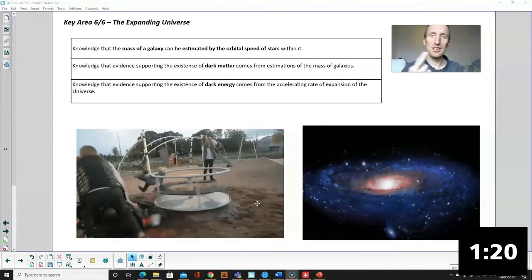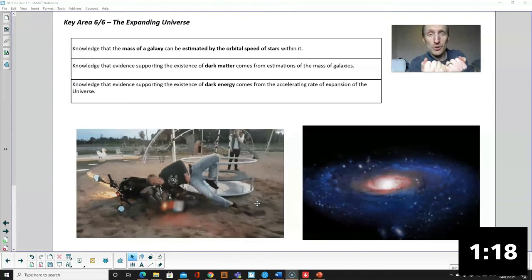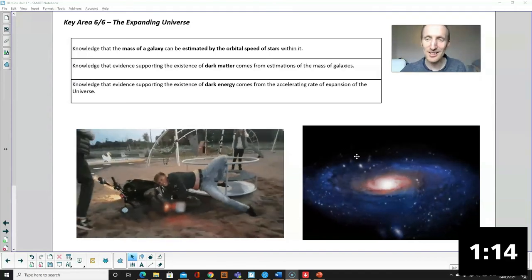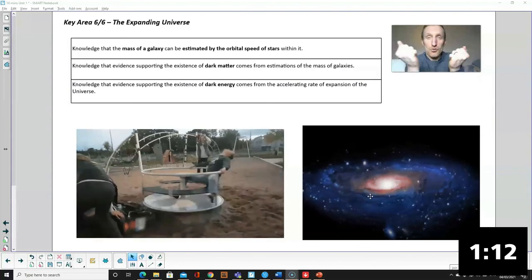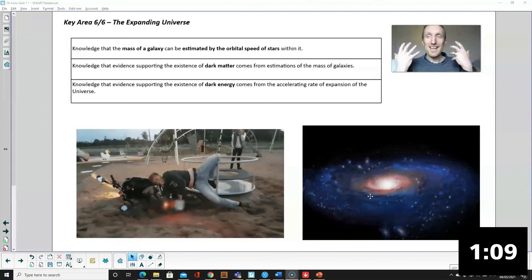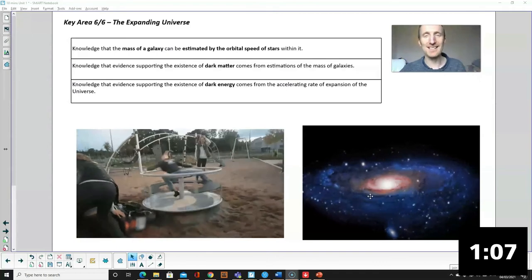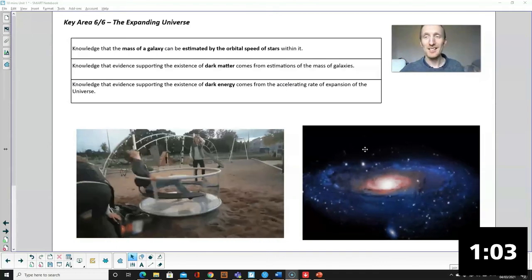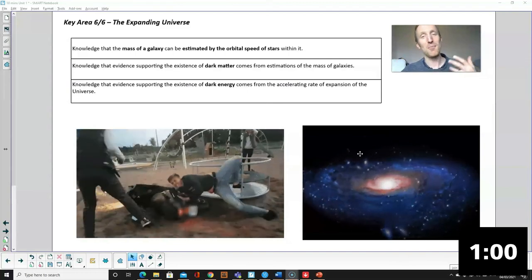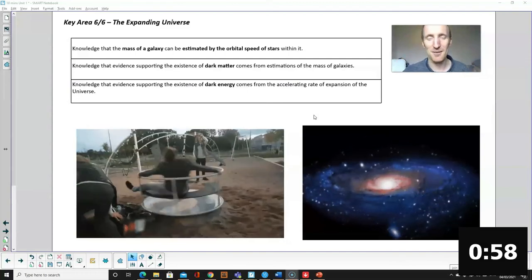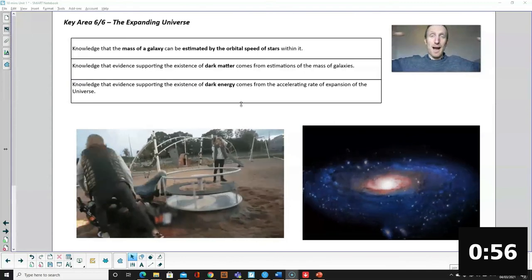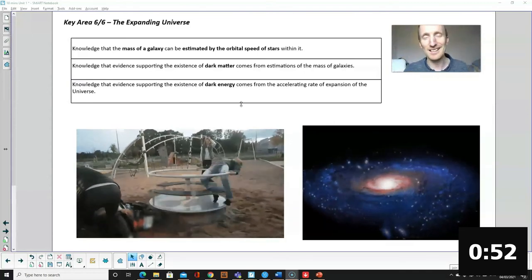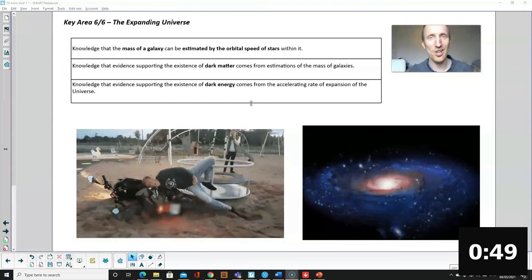So just like on a roundabout, the faster you spin, the more force you need to hold yourself in and stop yourself flying off. It's the same with our galaxies: the faster the stars are orbiting, the more gravity we need to hold everything together. But when we take observations, there's not enough mass in our galaxies to account for the gravity we need to hold it all together, so there's some missing mass, we don't know where it is, but we know it's there. We call it dark matter. Similarly, the universe is expanding faster and acceleration is increasing. We're not sure what's causing that acceleration. We call it dark energy at the moment. It's unknown.